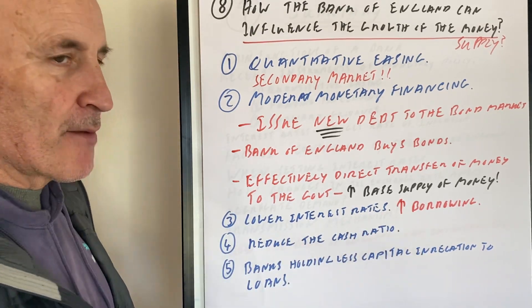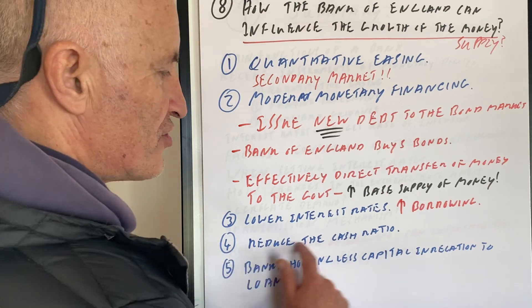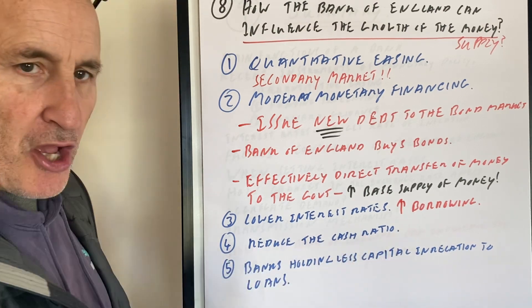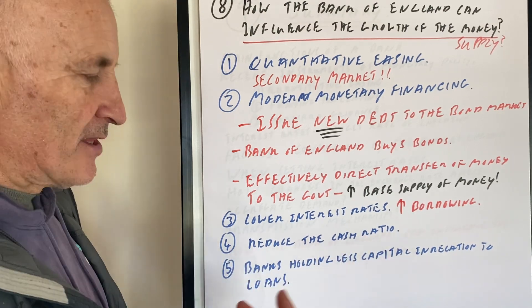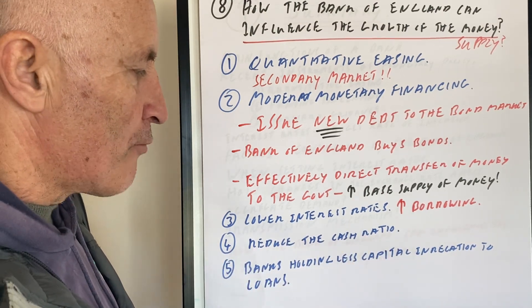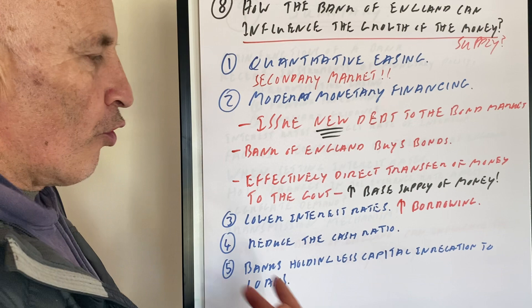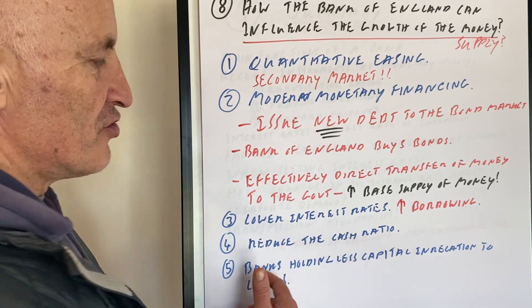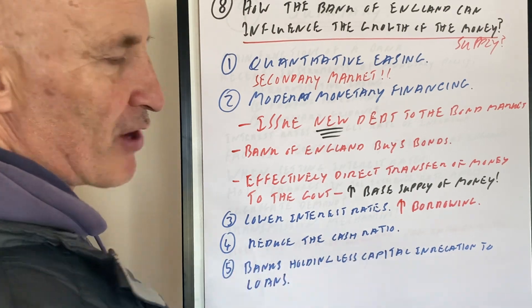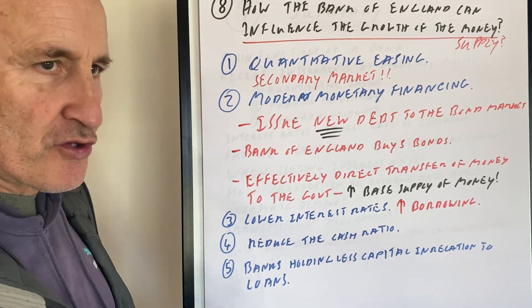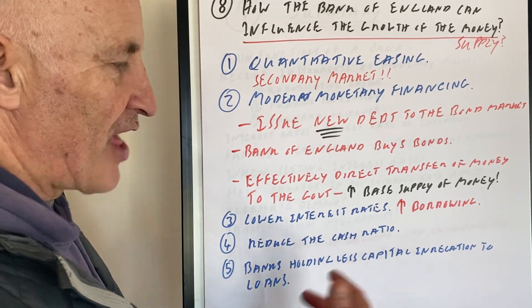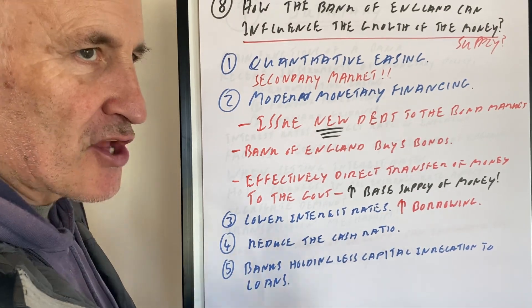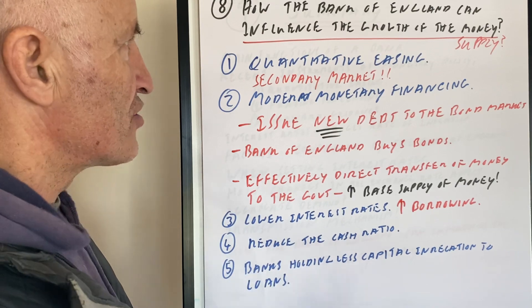Or we can lower interest rates, and that would increase the amount of borrowing in the UK. Or we could reduce the cash ratio, so that would mean that banks could lend out more money. Or we could reduce the capital ratio, and that would also mean that banks could therefore lend out more money to people.